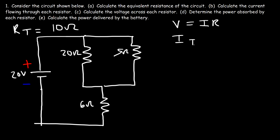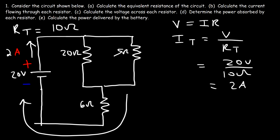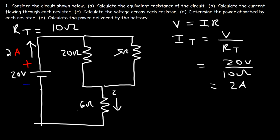The total current in the circuit is going to be the voltage of the battery divided by the total resistance — so it's 20 volts divided by 10 ohms. There's a total current of 2 amps flowing in the circuit. That's how much current leaves and re-enters the battery, which means 2 amps of current flows through the 6 ohm resistor.